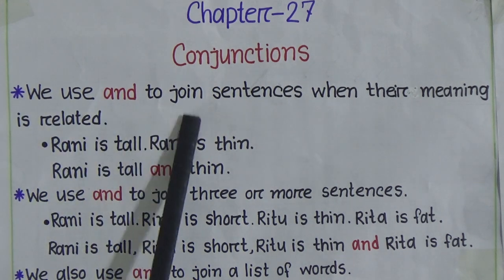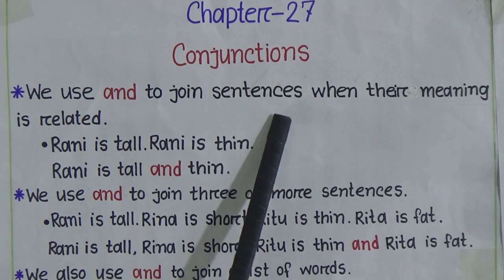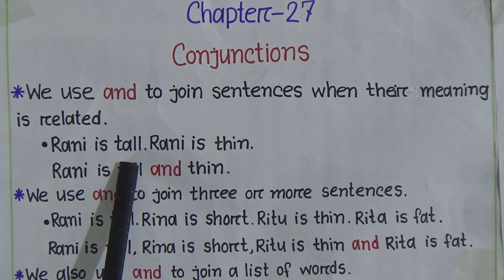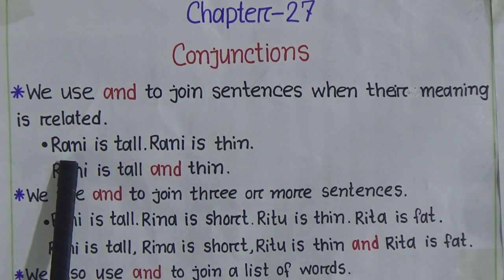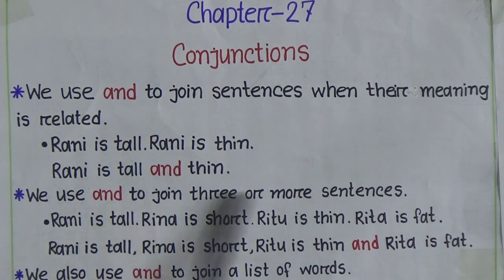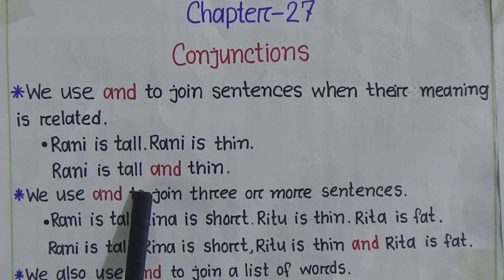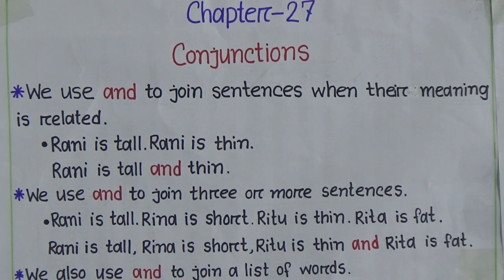First rule: we use 'and' to join sentences when their meaning is related. For example, 'Rani is tall' and 'Rani is thin' - here we are talking about the same girl Rani. We mix these two sentences together by using the conjunction: 'Rani is tall and thin.'